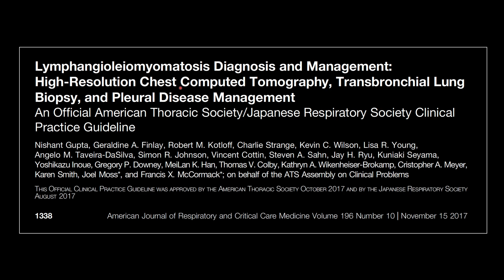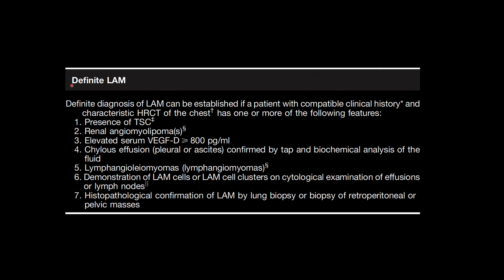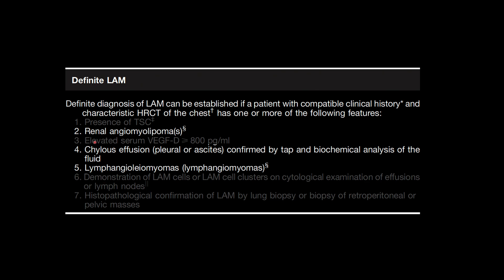I want to briefly discuss the clinical practice guidelines from 2017 covering LAM diagnosis and management, specifically regarding HRCT. According to this table, a definite diagnosis of LAM can be established if a patient with compatible clinical history and characteristic HRCT of the chest — meaning uniform lung cysts — has one or more of seven listed features. I want to focus on three imaging features you may see on CT.